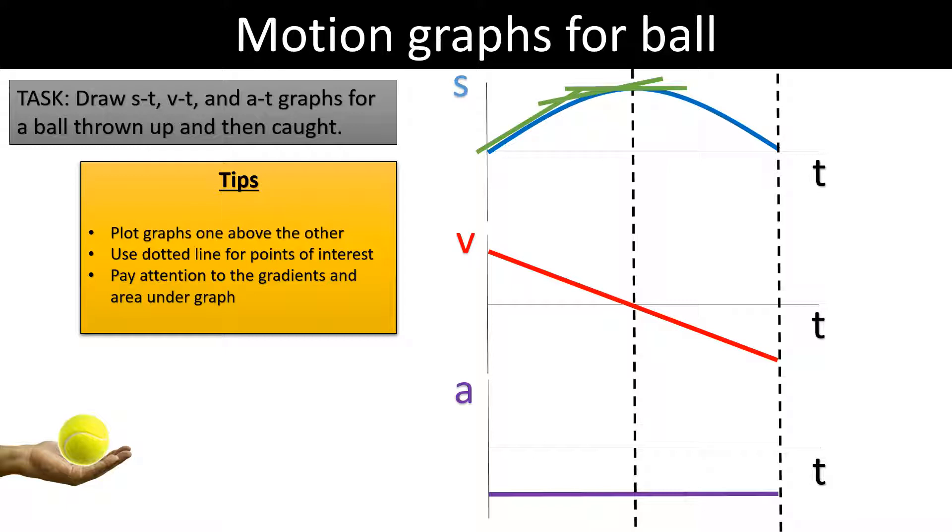Like in a displacement-time graph, the gradient is changing. The gradient of a displacement-time or distance-time graph is velocity or speed, so here we have a gradient which is changing so the velocity is changing, the vertical velocity is changing.